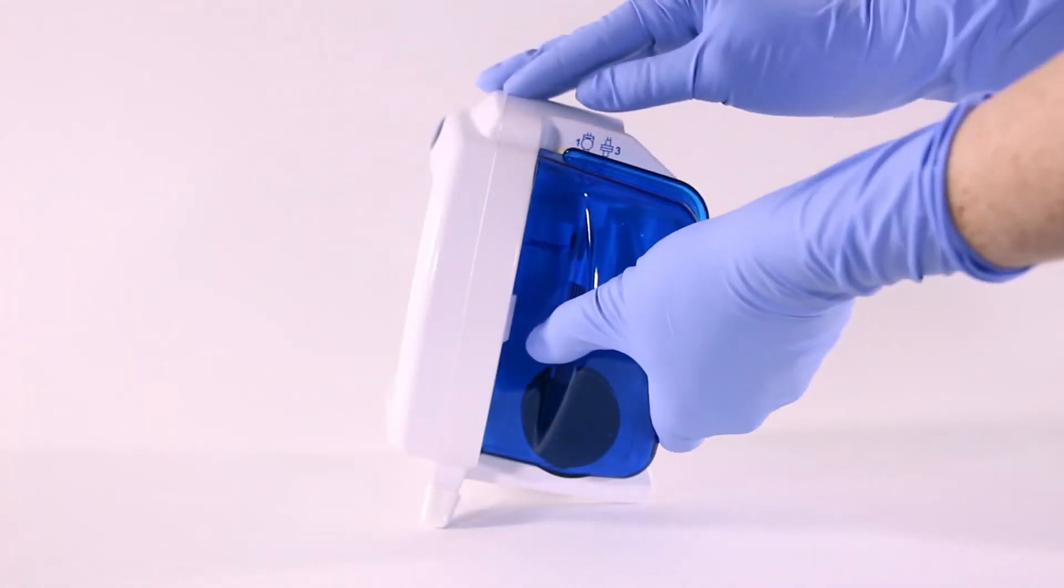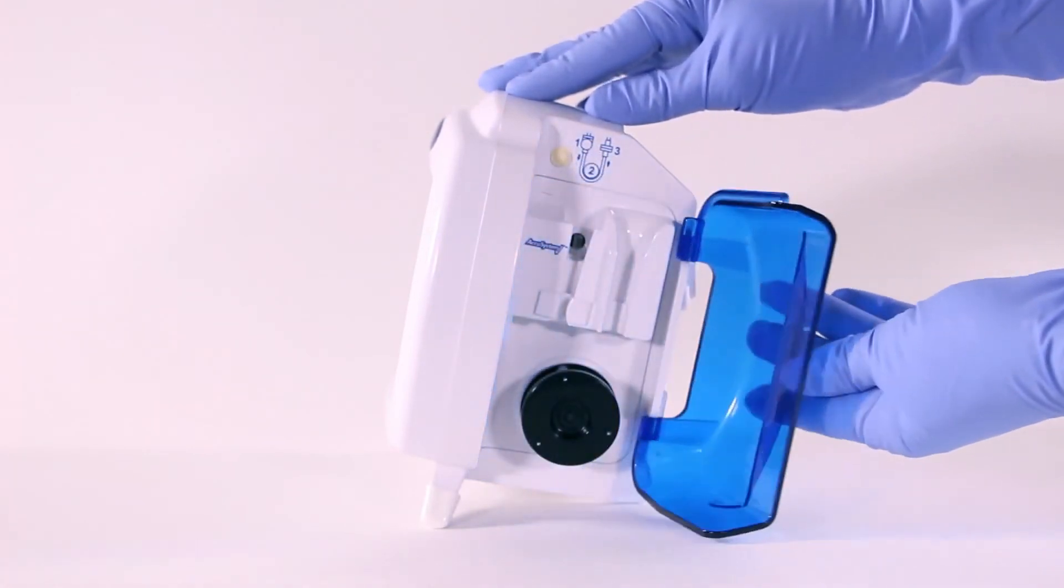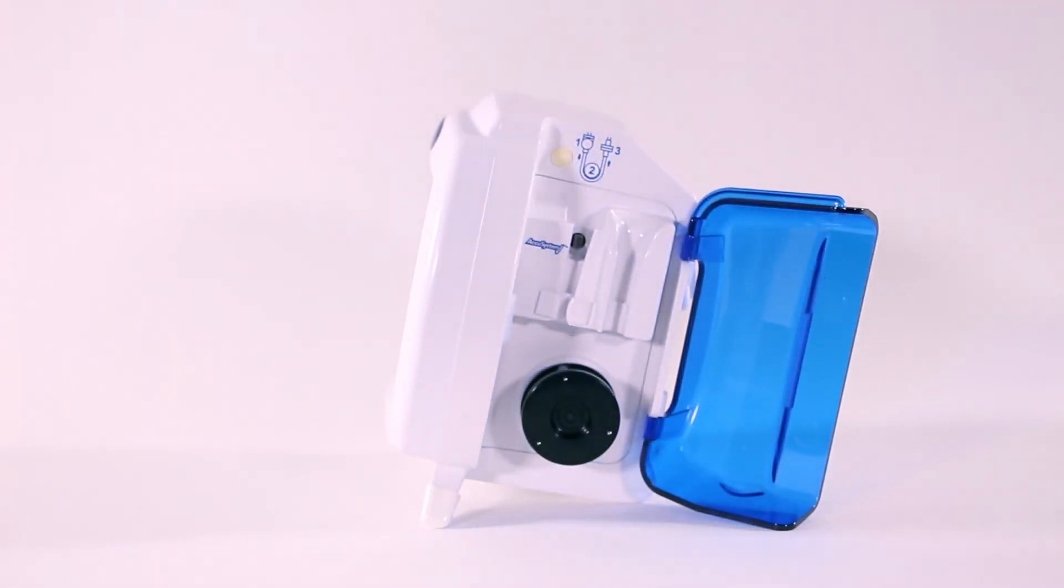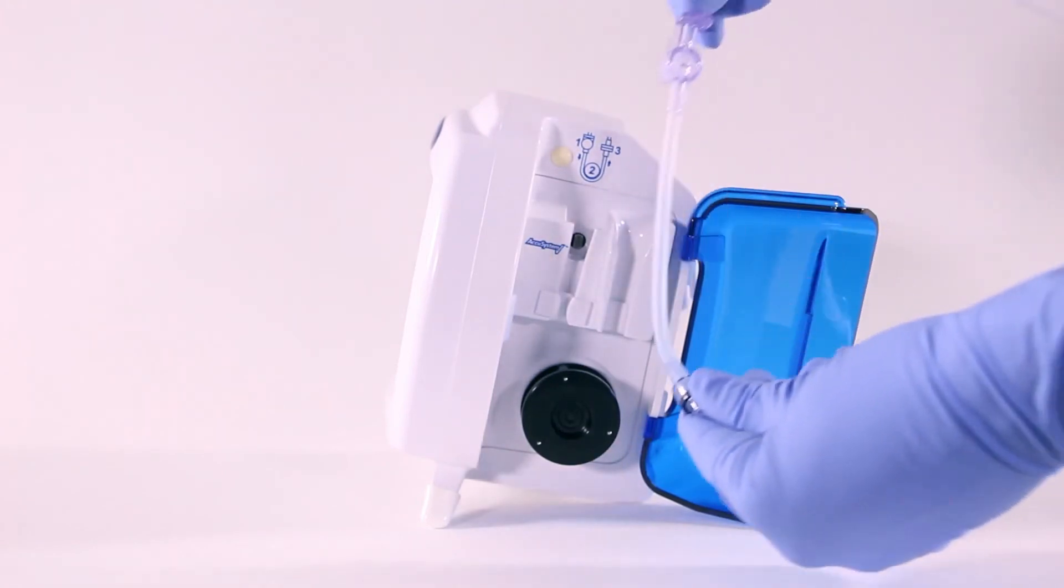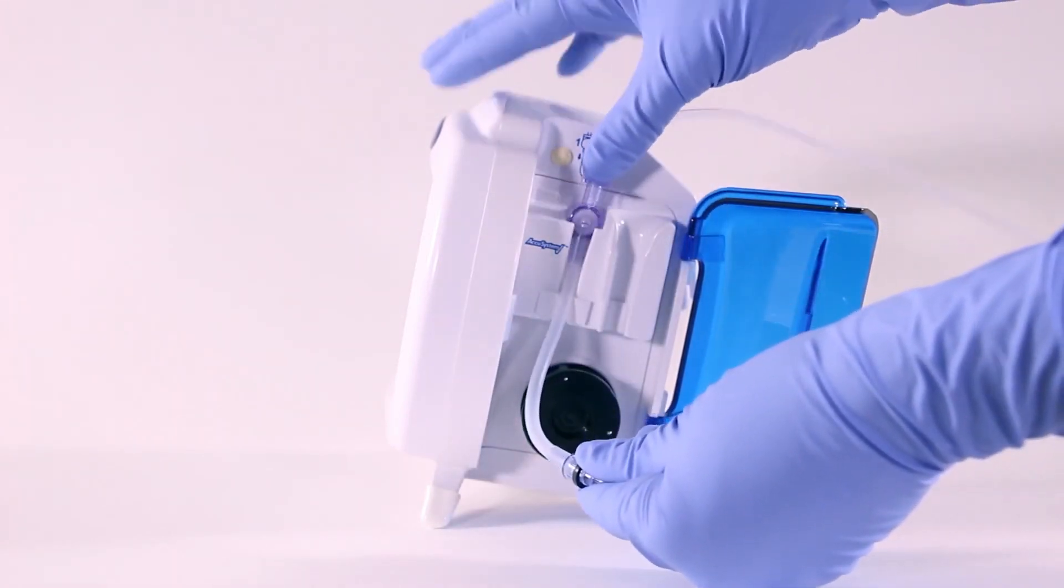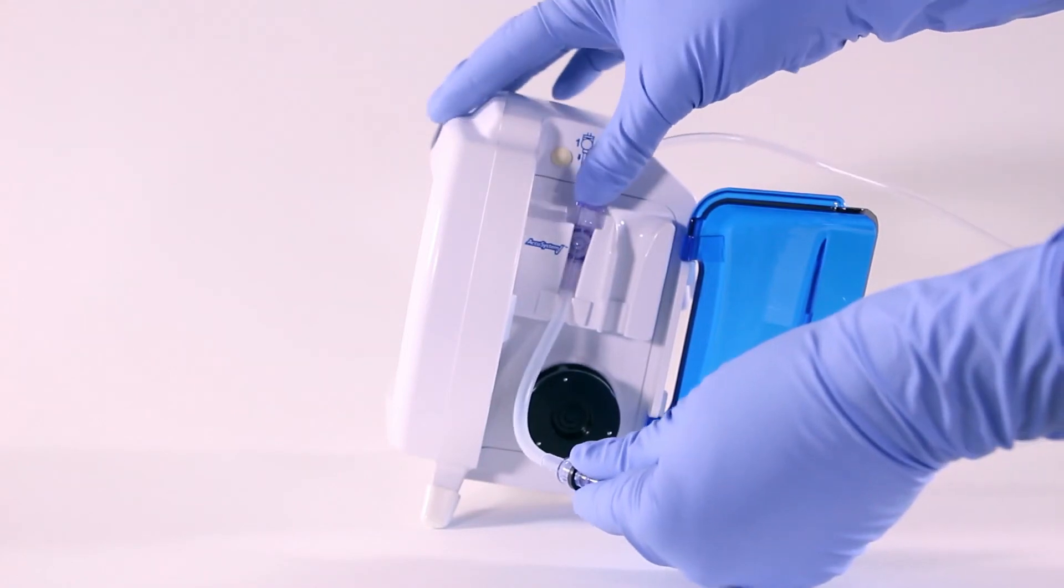Next, open the blue door to the feeding set loading area. Grasp the thumb tab on your feeding set and insert the tab directly into the left pocket of the loading set area. Press down firmly on the thumb tab and align with the white line to ensure it is seated.